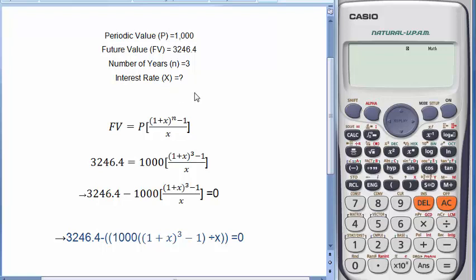This is the formula for ordinary annuity, and if we put all the value it will be like this. We can write this line as this. Now we have to put this equation into calculator.